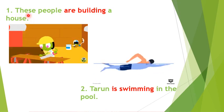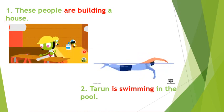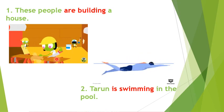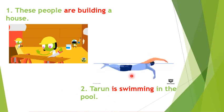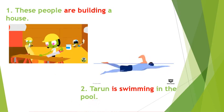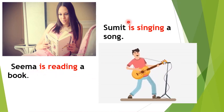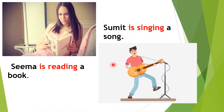Look at these pictures. These people are building a house. In this picture we can see that people are working. They are just cutting the wood with a saw. In the next picture, Tarun is swimming in the pool — the work is still going on. In this picture, Seema is reading a book; the action is still going on. Sumit is singing a song — Sumit is still singing. These pictures show that the work is still going on and has not been completed.